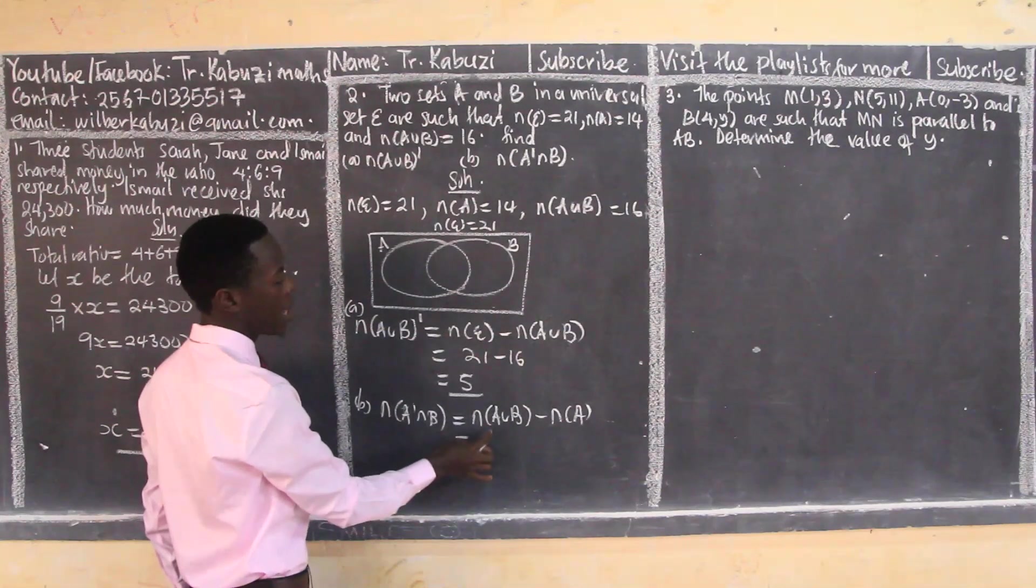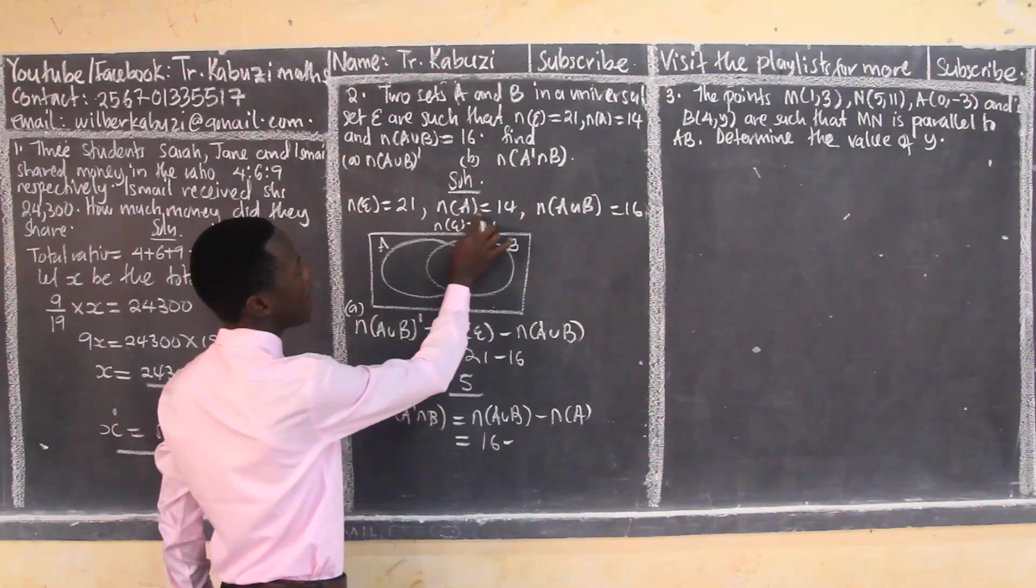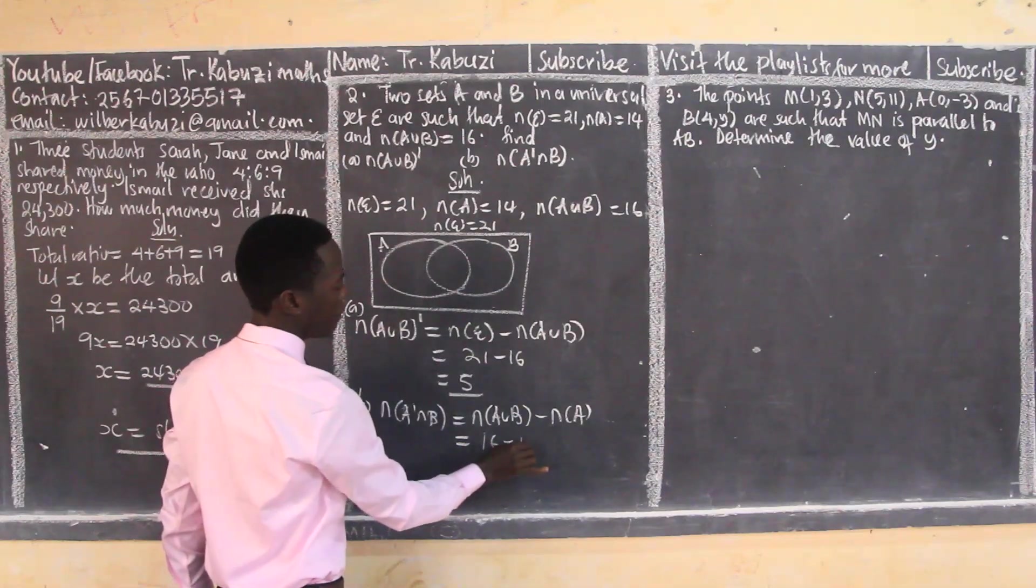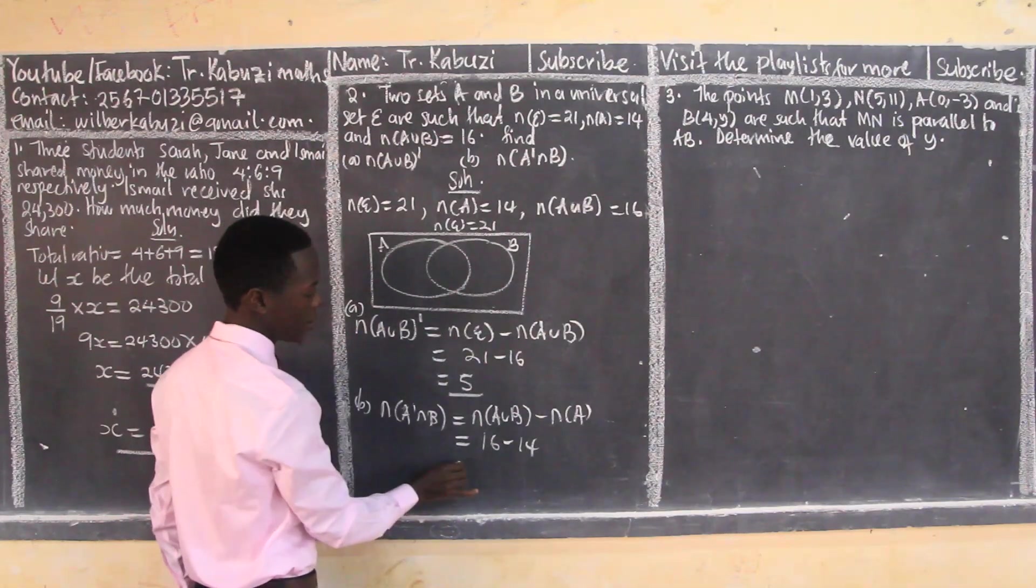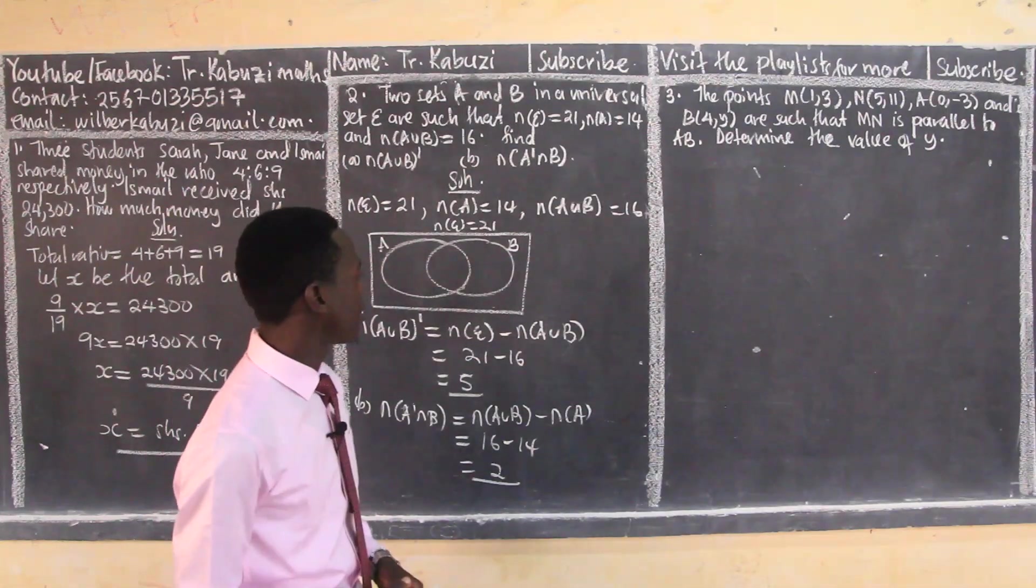Number of A complement intersection B will be the union, which is 16, minus the number in A, which is 14. I'll be getting 2. And that's how we handle that question.